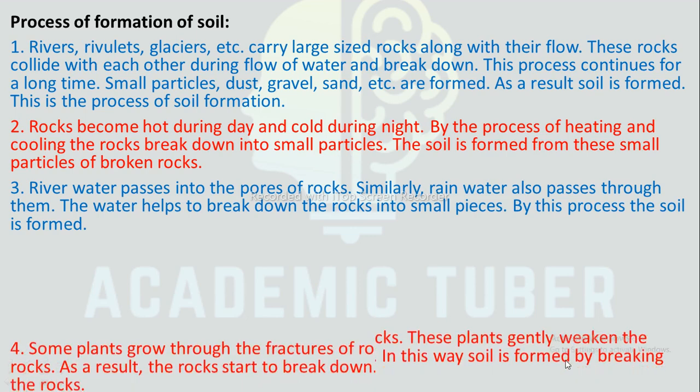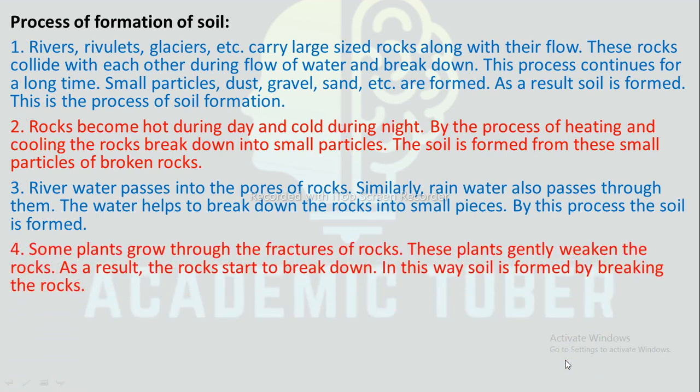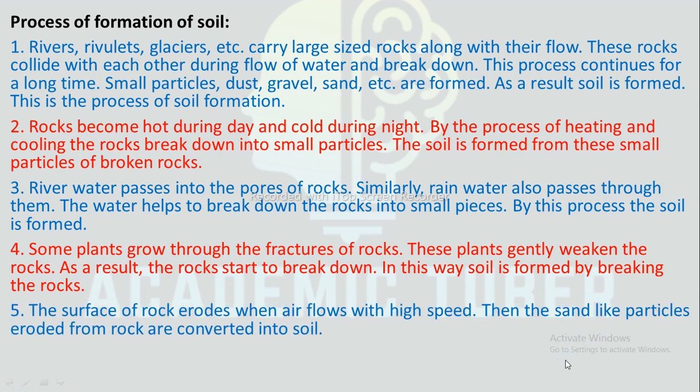Some plants grow through the fractures of rocks. These plants gently weaken the rocks, causing them to break down — and in this way soil is formed by breaking the rocks. Also, when air flows at high speed, sand-like particles eroded from rocks are converted into soil.